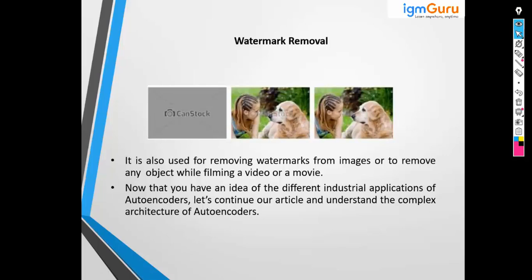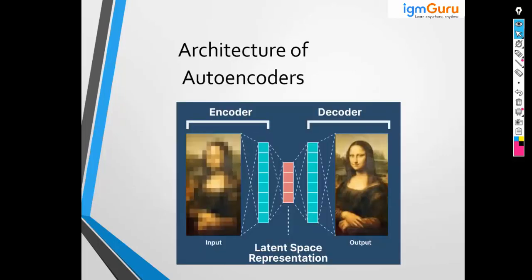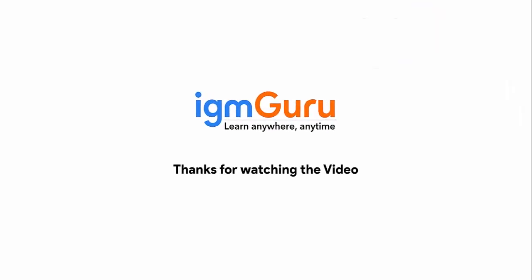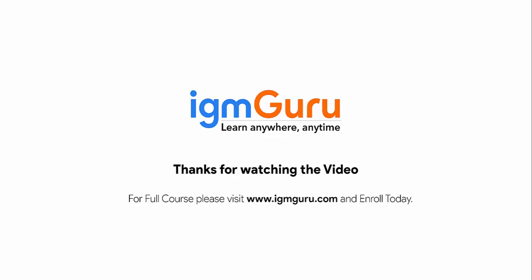Another application is watermark removal. For example, when you take a picture on some phones, a brand watermark may be added in the corner, or when you edit images on certain websites they add watermarks. If you don't need the watermark, you can use autoencoders to remove it. These are a few of the key applications of autoencoders. Thanks for watching the video — for the full course, please visit www.igmguru.com and enroll today.